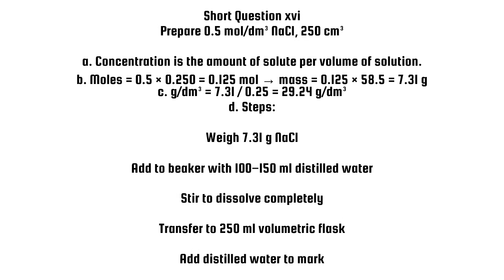D. Steps: Weigh 7.31g NaCl. Add to beaker with 100 to 150 milliliters distilled water. Stir to dissolve completely. Transfer to 250 milliliters volumetric flask. Add distilled water to mark.